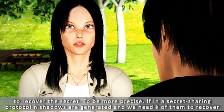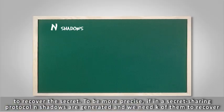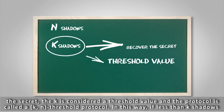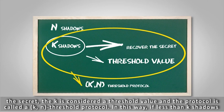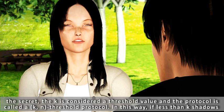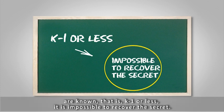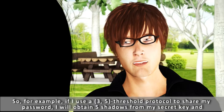To be more precise, if in a secret sharing protocol n shadows are generated and we need k of them to recover the secret, k is considered a threshold value and the protocol is called a k-n threshold protocol. In this way, if less than k shadows are known, that is k minus 1 or less, it is impossible to recover the secret.